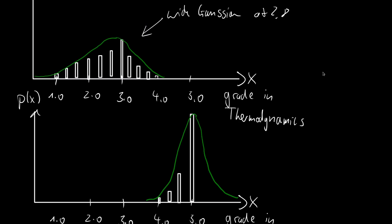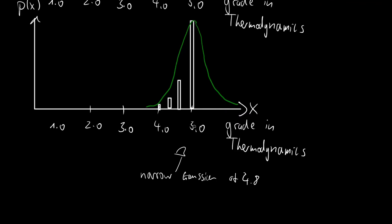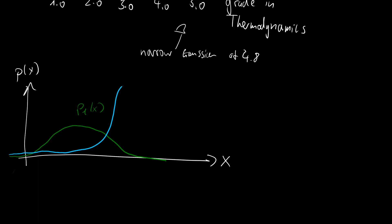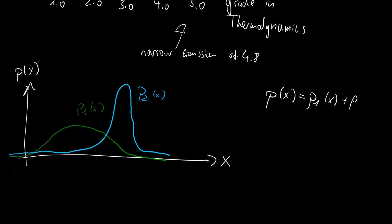You could ask yourself: is it just the superposition of those two? If we add them both up, are we getting our true distribution of the grades? If we plot both distributions together and ask whether p(x) = p1(x) + p2(x), we soon see that this violates normalization — the property that probability density functions must adhere to. The first distribution integrates to 1, and the second integrates to 1, so if we add them, the full distribution would integrate to 2, and it is no longer a valid probability density function.